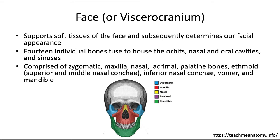The face is also called the viscerocranium. The skeletal face supports soft tissues of the face and subsequently determines much of our facial appearance. It is comprised of 14 individual bones that fuse to house the orbits, the nasal cavity, and the oral cavity as well as all the sinuses.